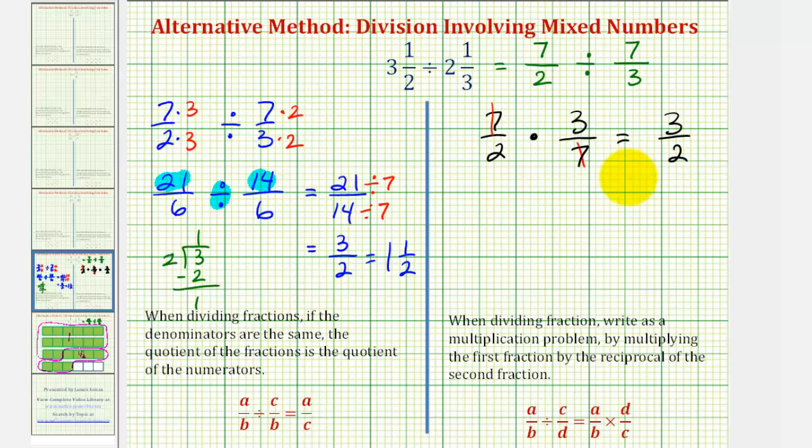Which, of course, is our quotient, which is also equal to one and one-half. So as expected, regardless of the method that we use, the quotient is the same, so it's up for you to decide which method works best for you. I hope you found this explanation helpful. Thank you.